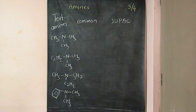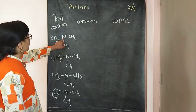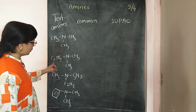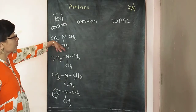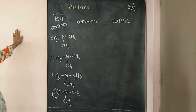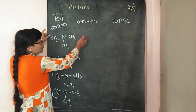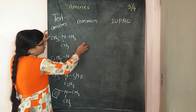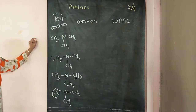Let's start with the tertiary amines. Tertiary amines means nitrogen is attached to three same or different groups. Then how to name in common name and IUPAC system. The basic rule is the same. In the common name system they are named as alkyl amines.